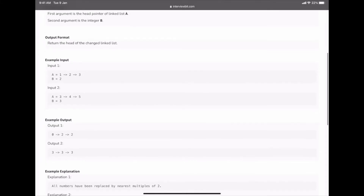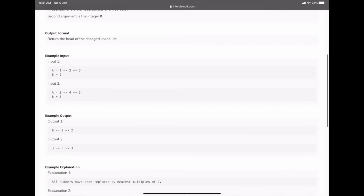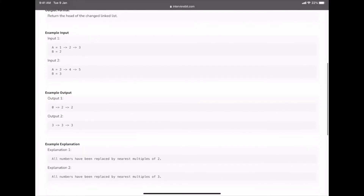Let's take an example: [1, 2, 1, 3] with B = 2. For 1, the nearest multiple of 2 is 0 (since 2*1=2 > 1, so we take 0). For 2, the nearest multiple of 2 is 2. For 3, the nearest multiple of 2 is 2. So the answer is [0, 2, 2]. Let's take a second example: [3, 4, 5] with B = 3. For 3, it's 3; for 4, it's 3; for 5, it's 3.